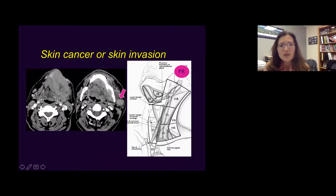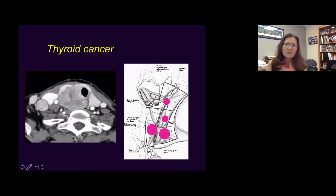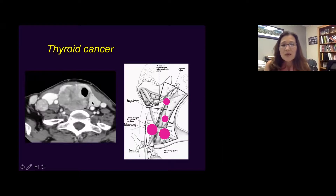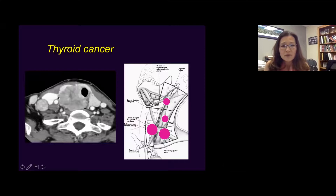Obviously this patient had a tumor so large and extensive it involved part of the mandible. Thyroid cancer is a little different from squamous cell carcinoma, but you'll see this quite often. This is a patient with a large thyroid carcinoma — notice the huge mass in the thyroid gland. Metastasis tends to go to levels 2, 3, 4, and also 6. The central zone can be involved by thyroid cancer. This is a papillary thyroid cancer with metastasis to level 4 lymph nodes.